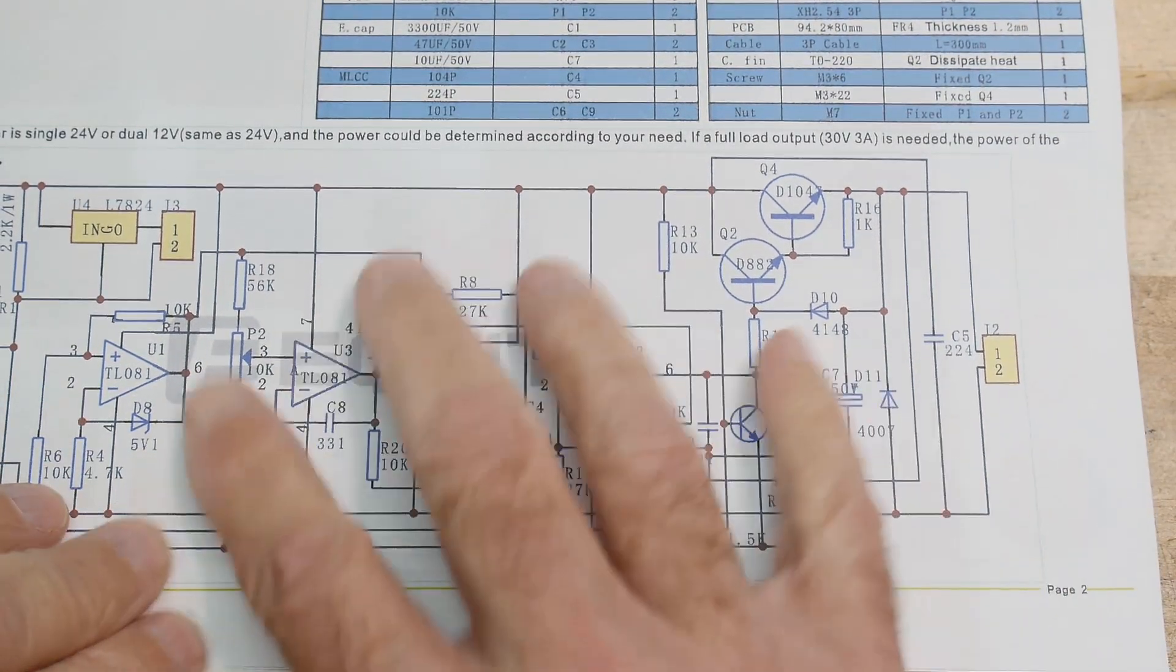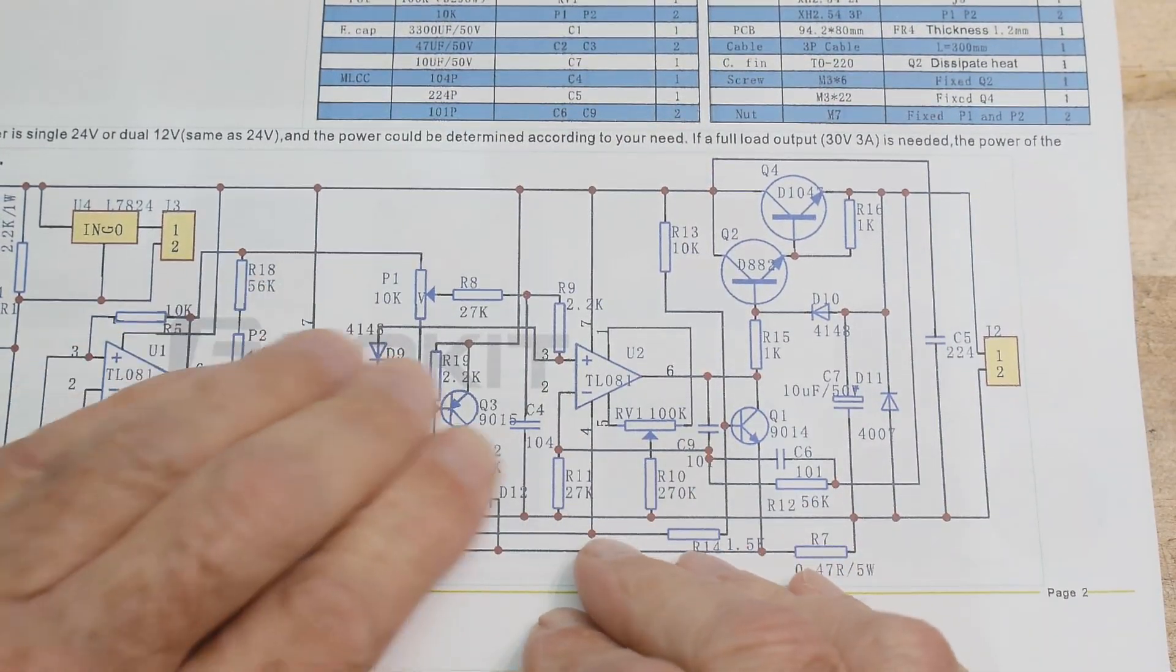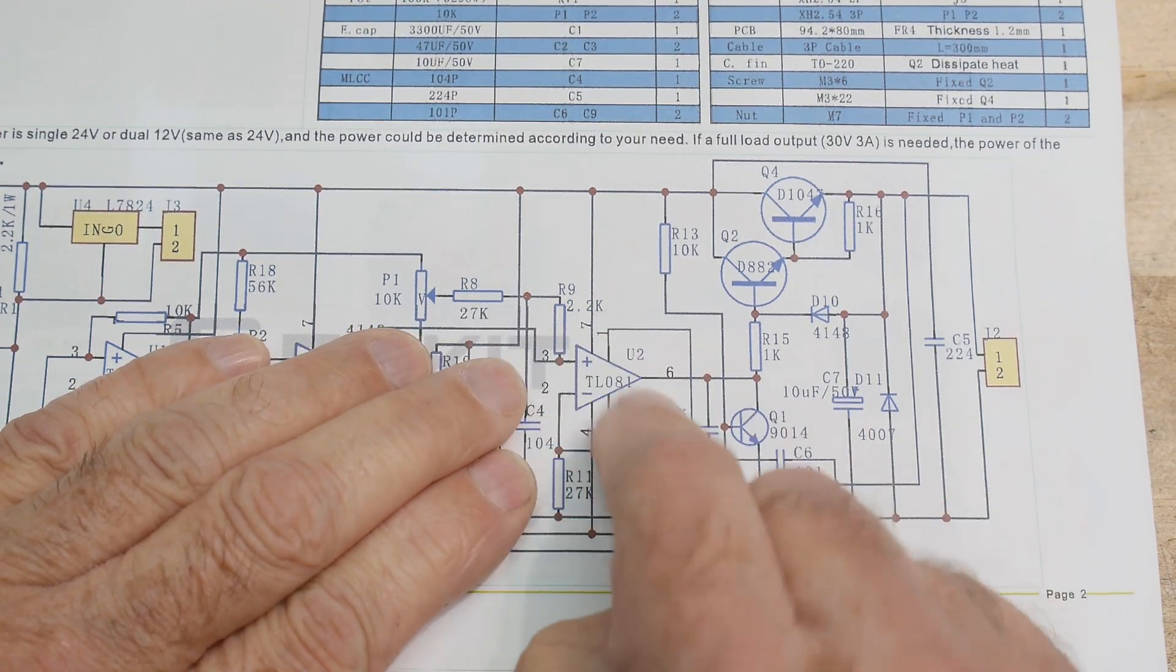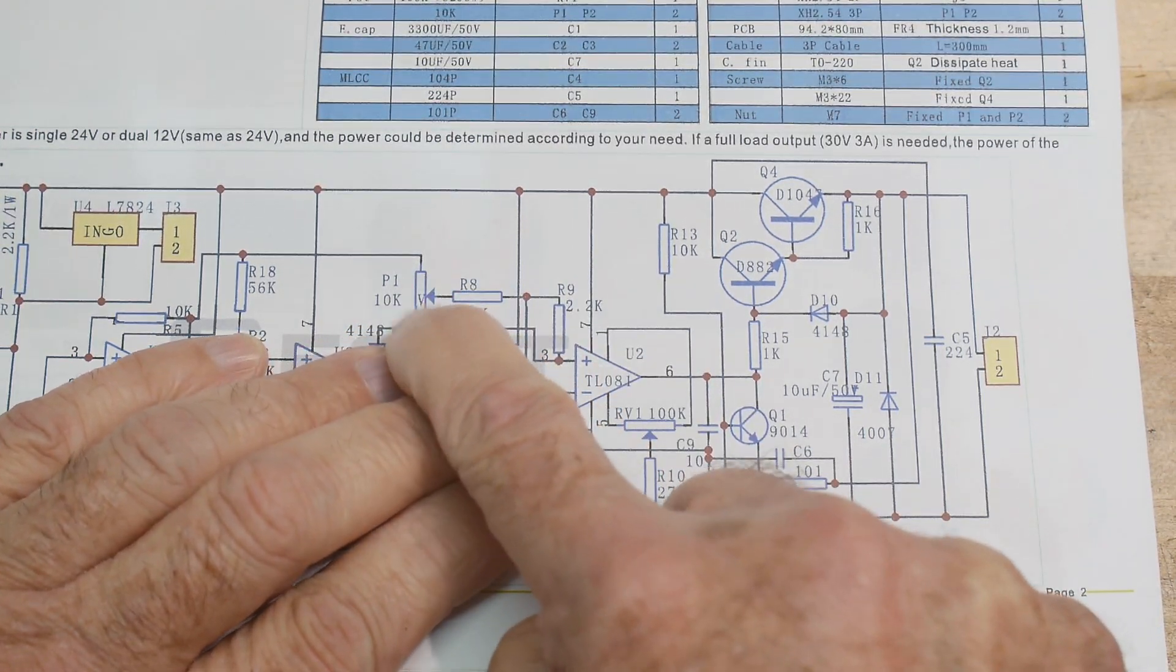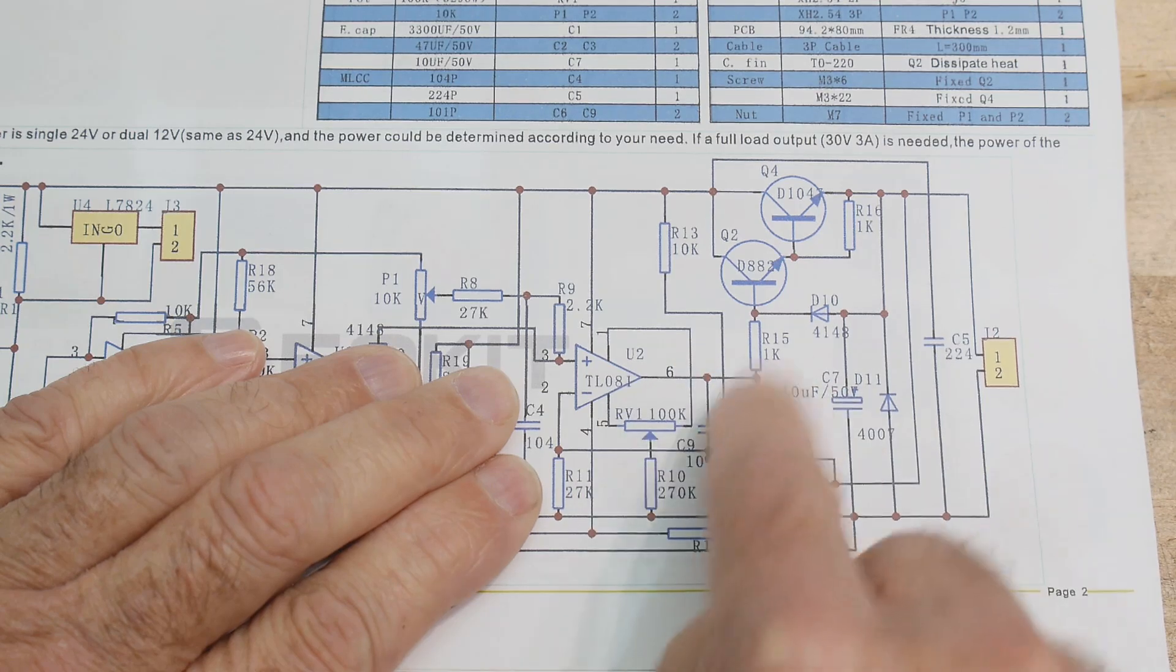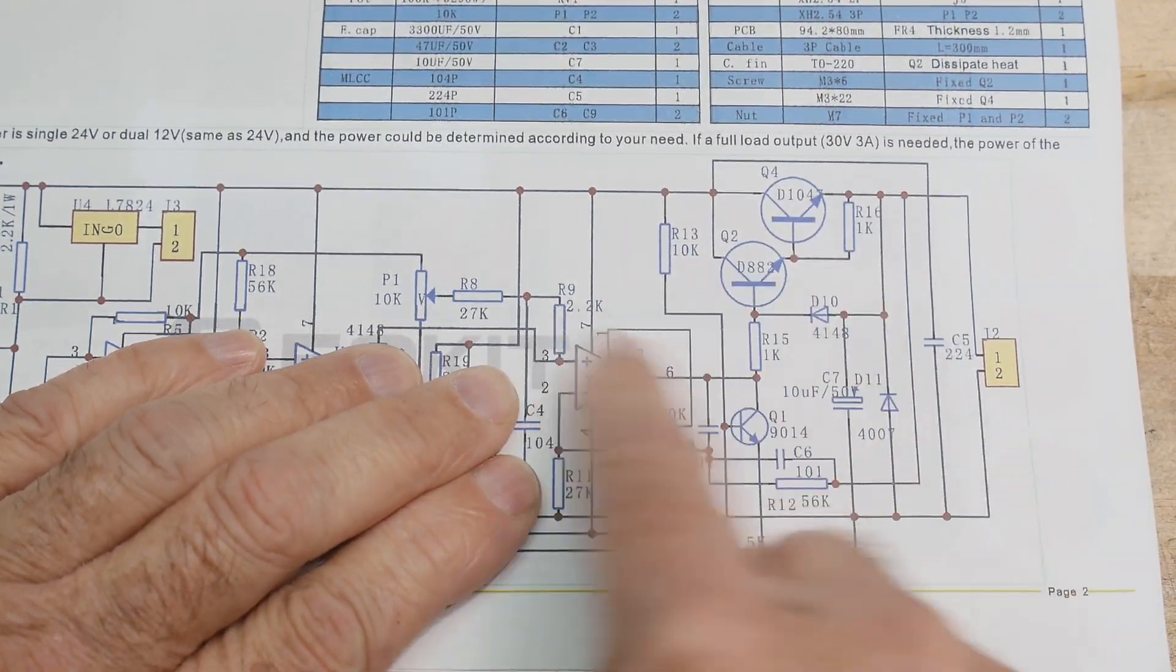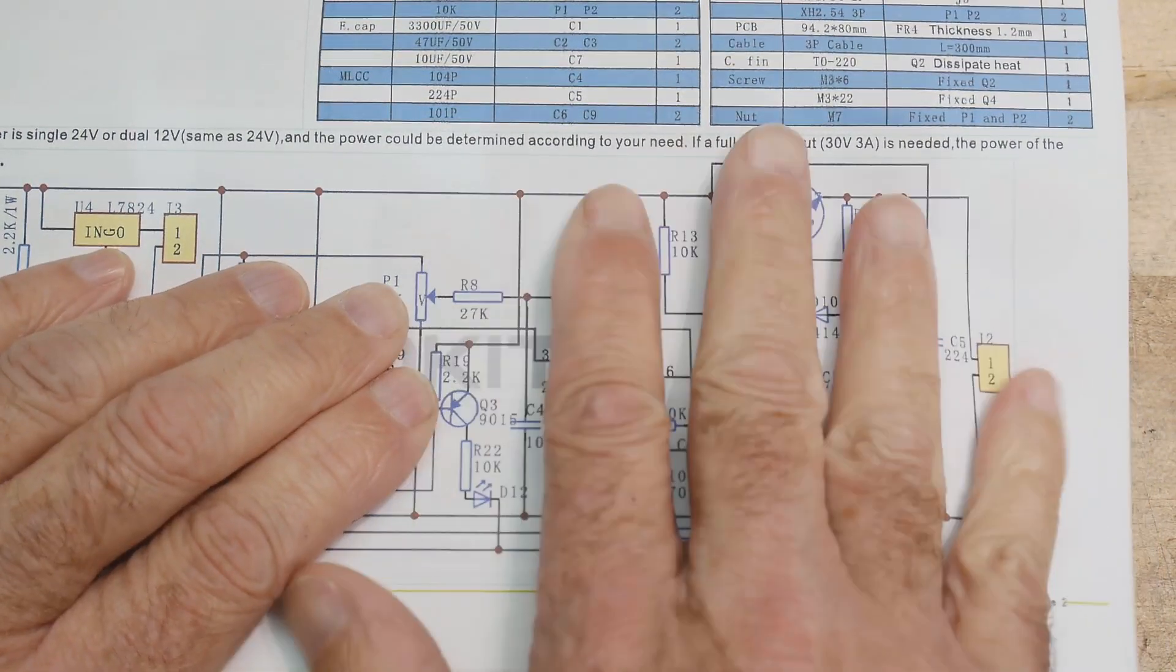Okay, so where in this is all of that going on? So this op amp is the voltage op amp. Here's the potentiometer and it does its voltage thing. Here's the Darlington output. So that's being handled there.